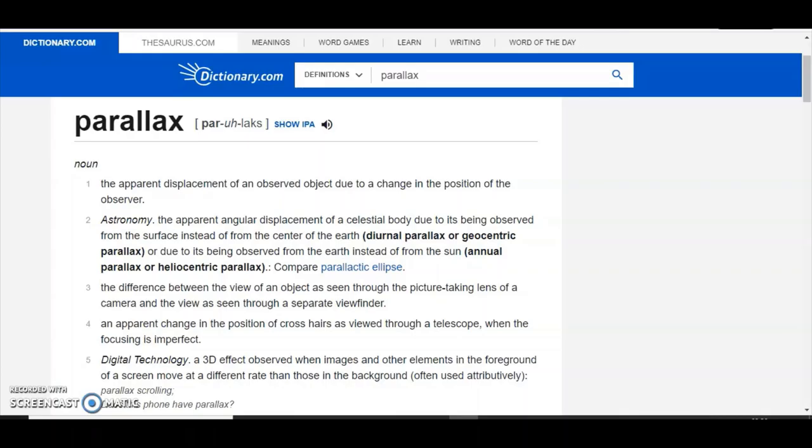Number three: parallax. The true definition of the meaning of parallax from dictionary.com says the apparent displacement of an observed object due to a change in the position of the observer. Again, these bastards have hijacked the meaning of the term and made it completely different. They say stars are moving with us in the heliocentric model.